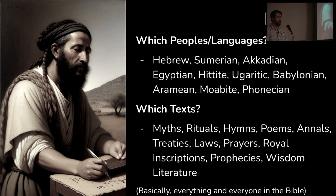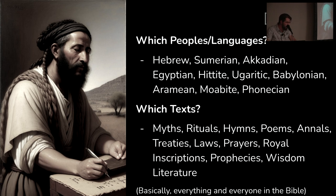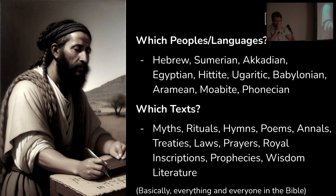The question is: what peoples, what languages, what texts are we comparing with scripture? This comes from the book Ancient Near Eastern Thought in the Old Testament. These texts would include Hebrew, Samarian, Akkadian, Egyptian, Hittite, Ugaritic, Babylonian, Aramean, Moabite, Phoenician, et cetera. And which types of texts? Pretty much everything that's in the Bible: myths, rituals, hymns, poems, annals, treaties, laws, prayers, royal inscriptions, prophecy, wisdom literature. If you find it in the Bible, chances are there's a similar genre outside of the Bible from their neighbors.